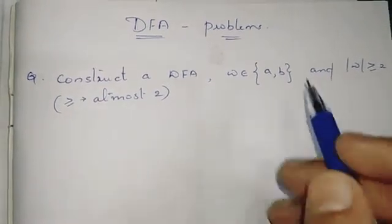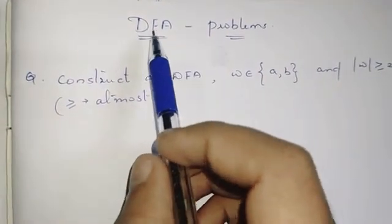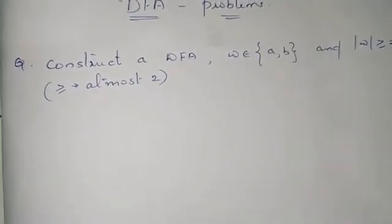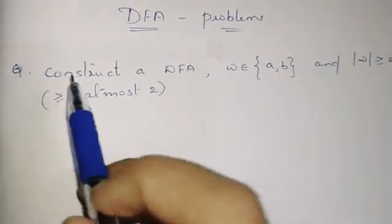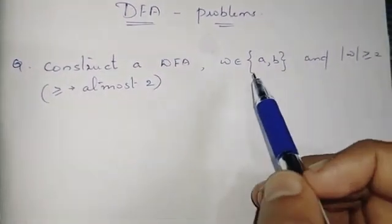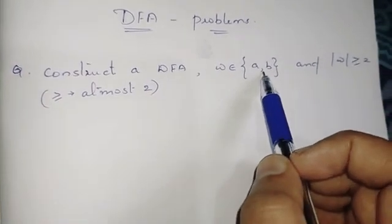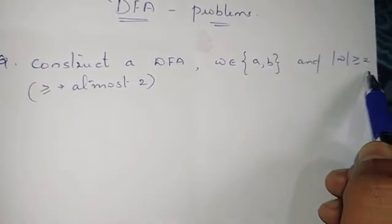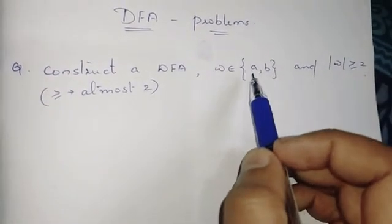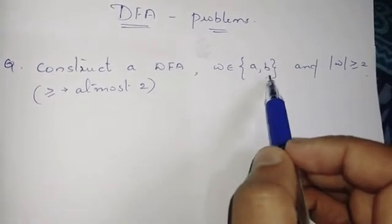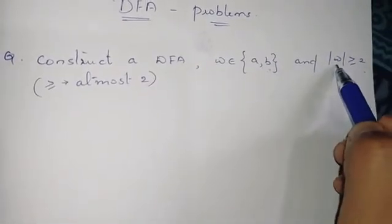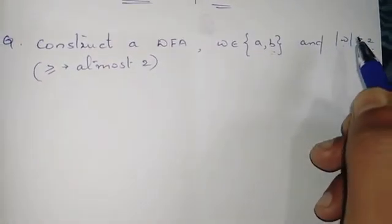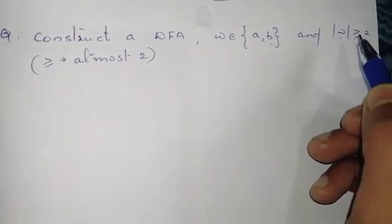Let's start with DFA. DFA is Deterministic Finite Automata. We will do a question about DFA — a DFA construction. We did a set of strings over {A, B} where the length of a string should be greater than or equal to 2. How do we construct a DFA?